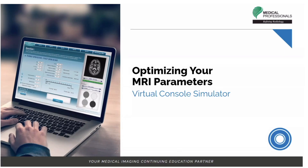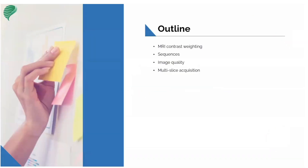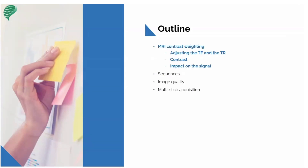We've got a lot to get through. We're going to start out by looking at some basics first — MR contrast weighting, sequences, image quality, and then we'll get into some multi-slice acquisitions. In this first section, we'll look at contrast weighting, going through the basics of adjusting the TE and the TR to create our contrasts we call T1 and T2, and then the impact that has on signal.